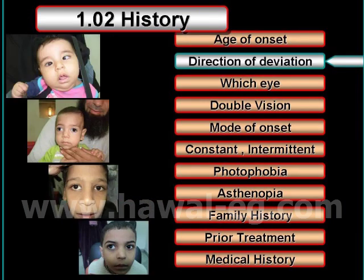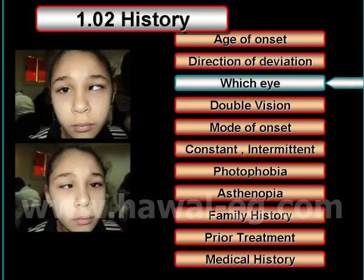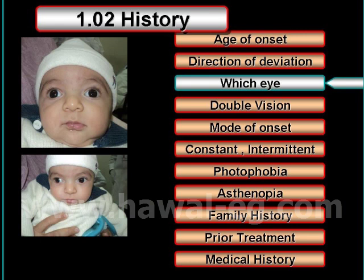Then you ask about the direction of deviation of the eye — is it eso deviation, exo deviation, a vertical deviation, or a combination of these? Then you ask about which eye is the deviating eye. This question will alert the examiner to the presence of an alternating strabismus where there is equal vision in both eyes. Sometimes you may face a preferred eye and an unpreferred eye, where amblyopia is usually present.